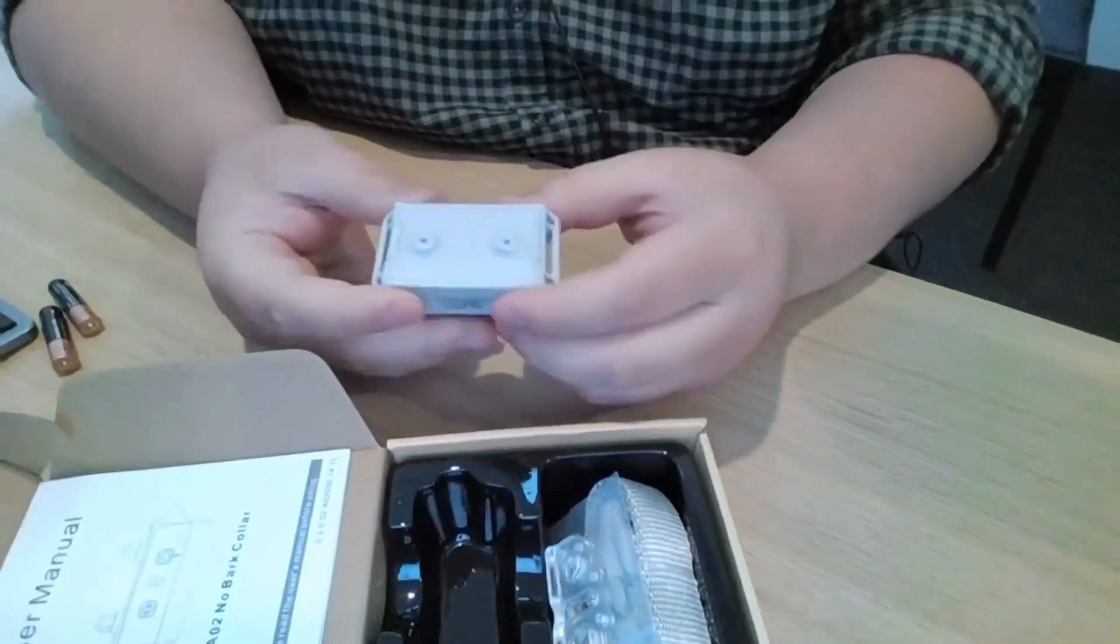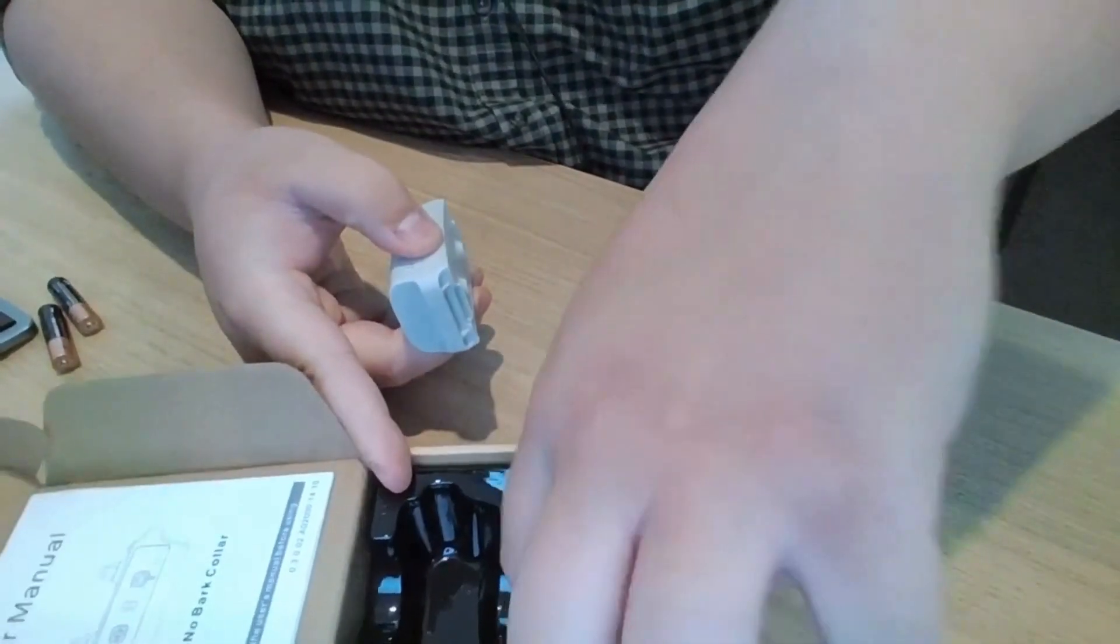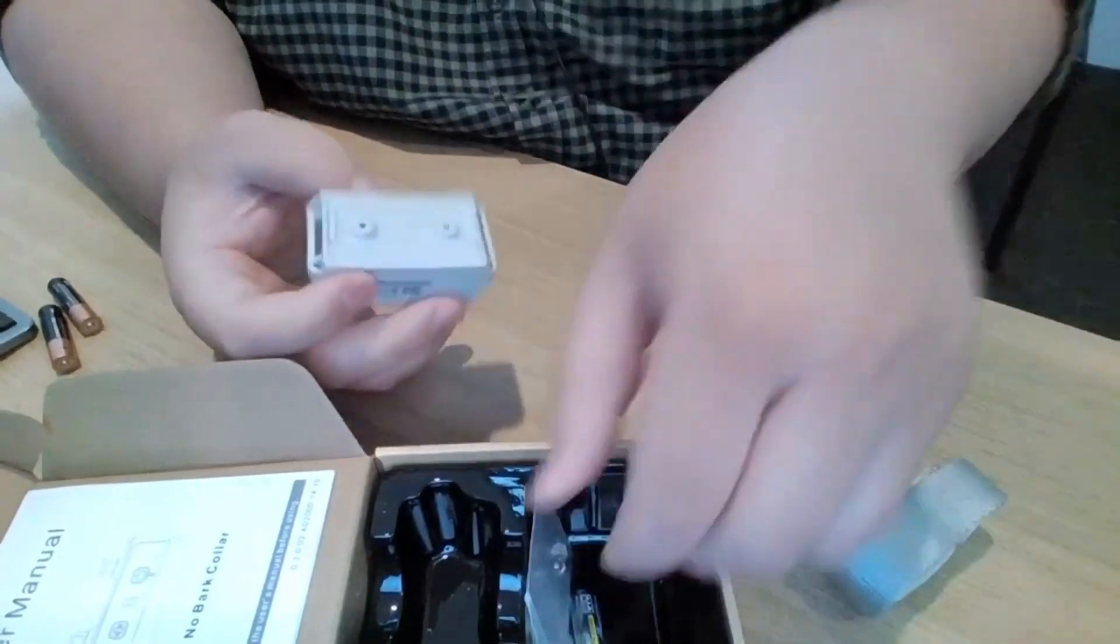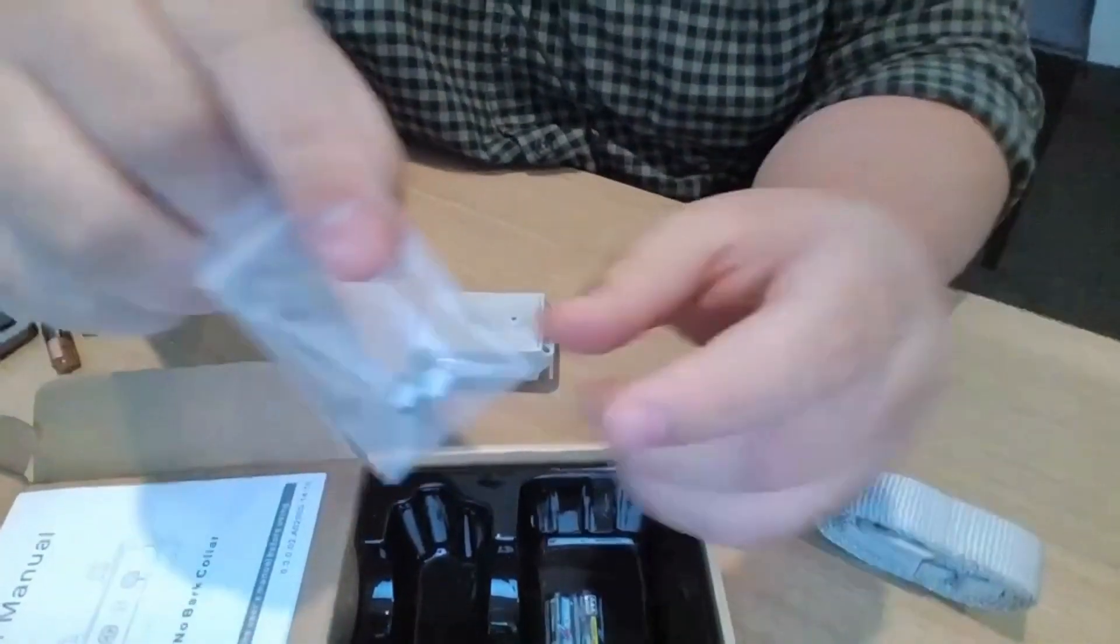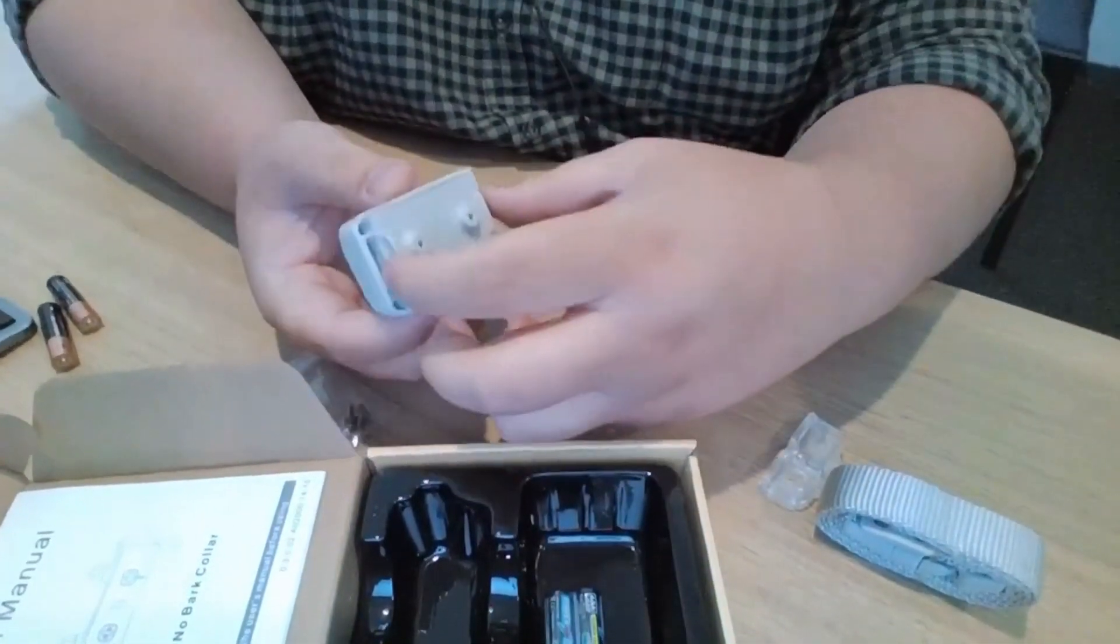Of course we do have the actual unit here. They do come with a band which fits pretty much most small to medium dogs. Inside the kit as well, they do come with these two pins. Now let's do the setup.